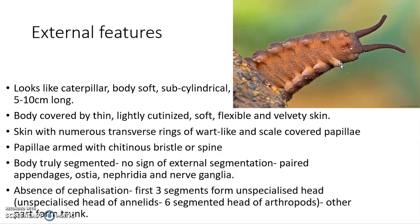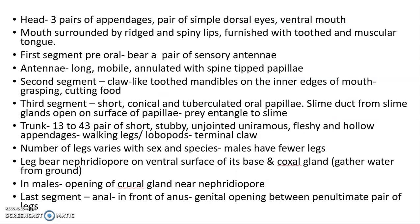Annelids have an unspecialized head made up of three segments, while arthropods have a head which is six-segmented. All other segments apart from the first three form the trunk of the body. The head has three pairs of appendages, a pair of simple dorsal eyes, and a ventral mouth surrounded by ridged and spiny lips furnished with teeth and a muscular tongue. The first segment is pre-oral, bearing sensory antennae that are long, mobile, and annulated with spine-tipped papillae.